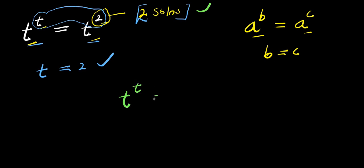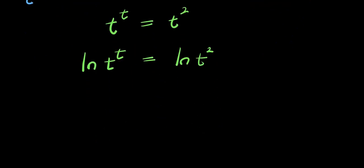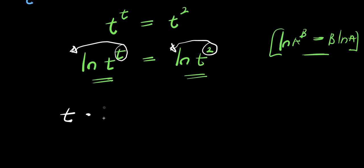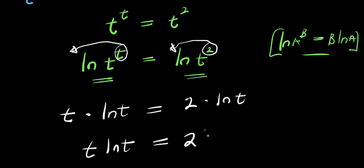We have t to the power of t and this equals t to the power of 2. We are going to use two different methods, so let's start with the first method using natural log. I have ln of t to the power of t, and this equals ln of t to the power of 2. Using the logarithm property — if you have ln of a to the power b, this equals b times ln a — applying this property gives us t times ln t equals 2 times ln t.